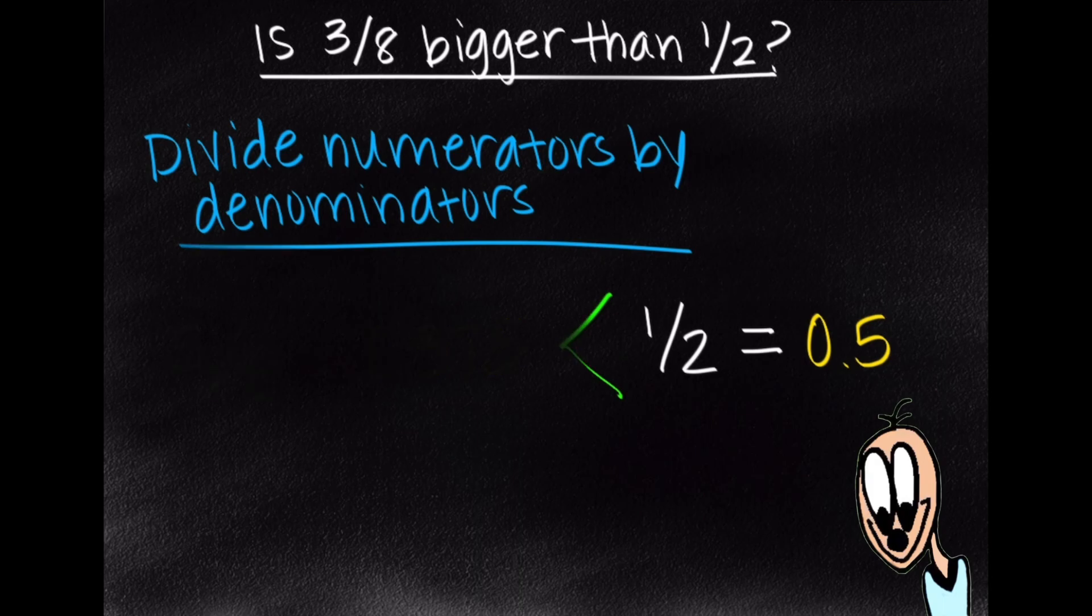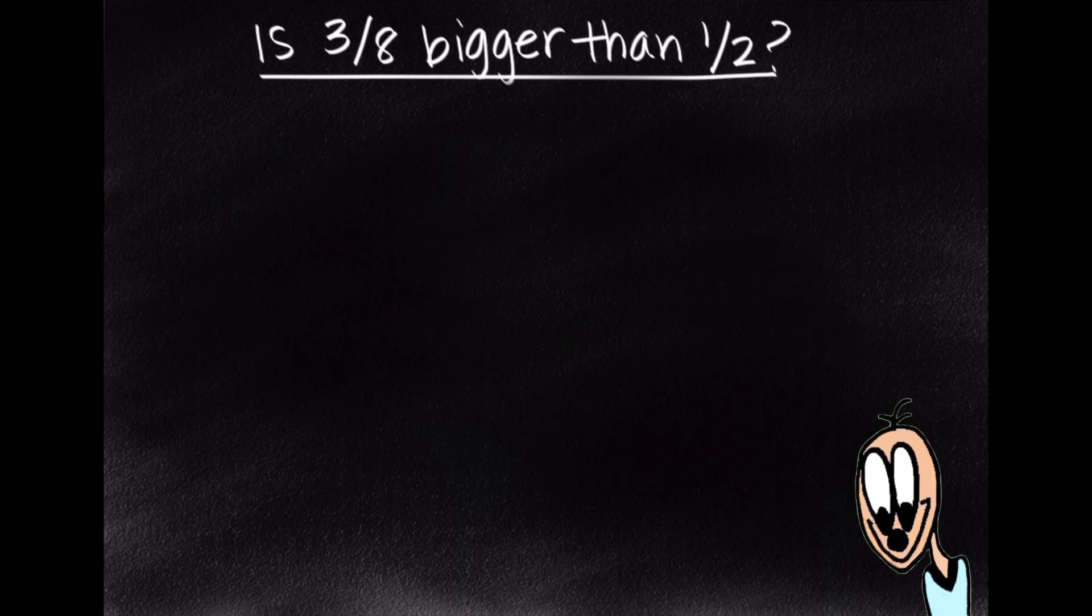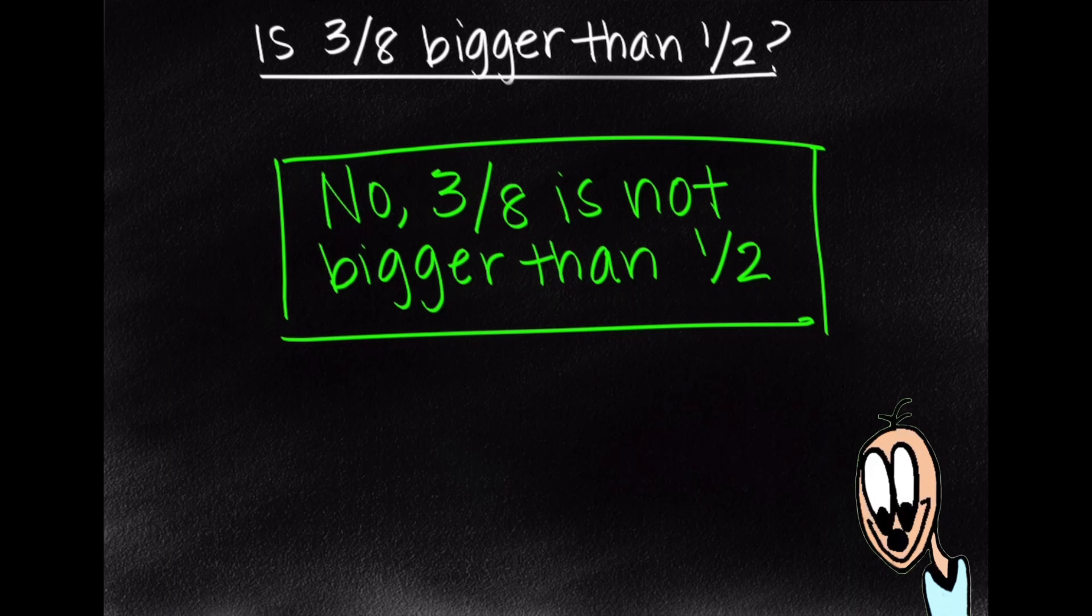So our final answer that we got from all these methods of comparing fractions is that no, 3 eighths is not bigger than 1 half. So hopefully you found this video helpful and you know how to compare fractions a little bit better. Thanks for stopping by and we'll see you next time!